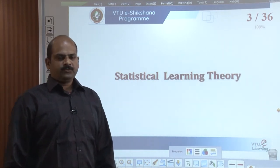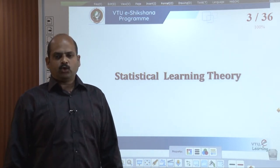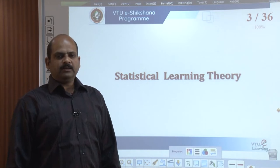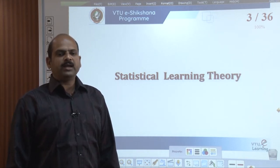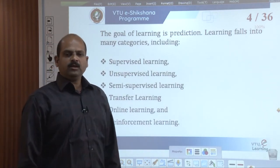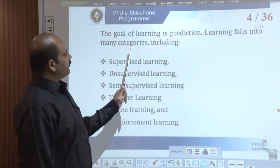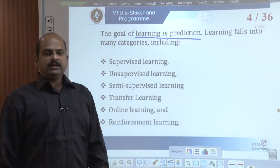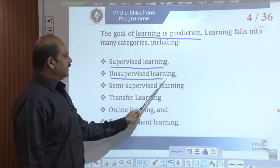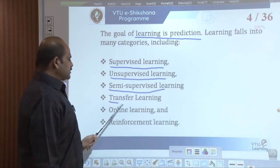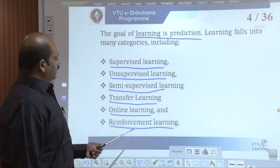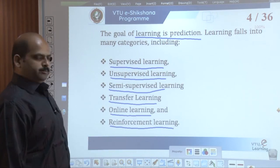What is statistical learning theory? It is a framework for machine learning drawing from the fields of statistics and functional analysis. Statistical learning theory deals with the problem of finding a predictive function based on data. The goal of learning is prediction. Learning falls into many categories including supervised learning, unsupervised learning, semi-supervised learning, transfer learning, online learning, and reinforcement learning.